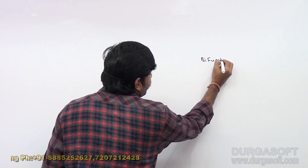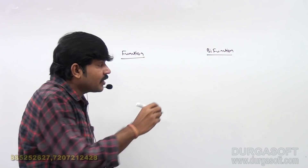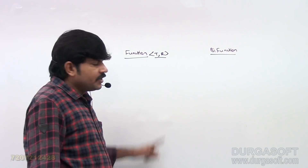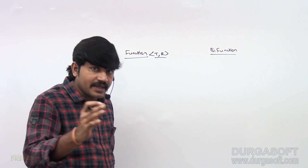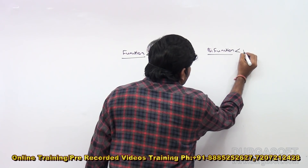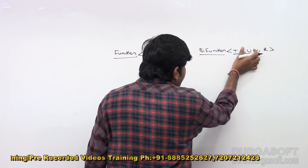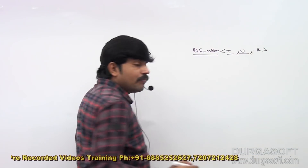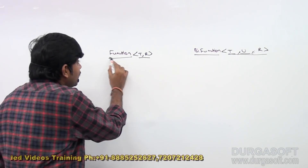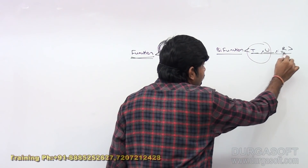We performed a detailed analysis about function and bifunction. Function can take one input and can return one value. But bifunction can take two input values and it is going to return one return value. So bifunction can have three type parameters, while normal function can have two type parameters — input type and return type.